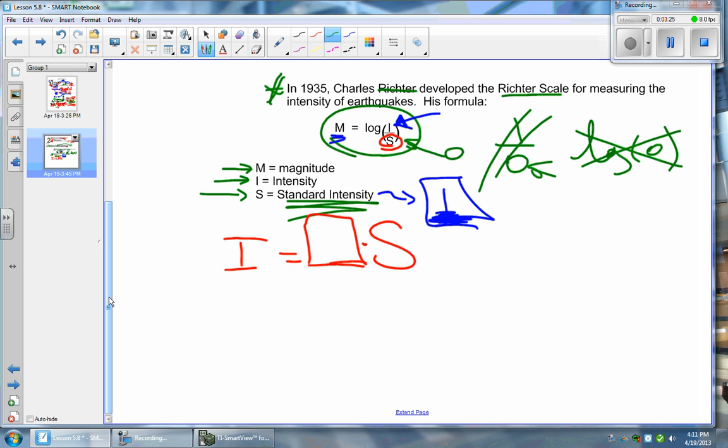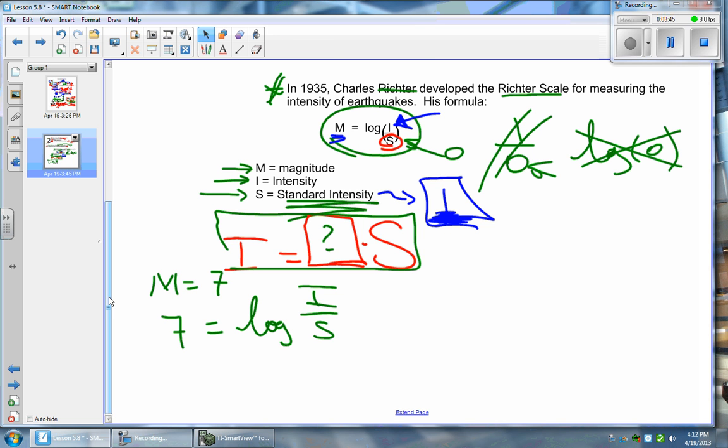Okay, let's start with the magnitude 7 one. Why not? So if the magnitude is 7, we know that 7 equals the log of I over S. And remember, that's what you're trying to find. You're trying to find this amount right here. Well, probably the easiest thing you can do here is remember that this is log base 10. So that means you can take 10 to the power of 7. 10 to the power of 7 equals I over S. And check it out, this is so easy from this point on.